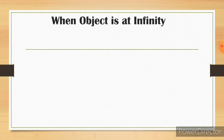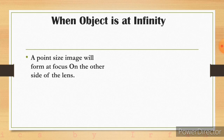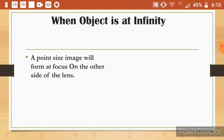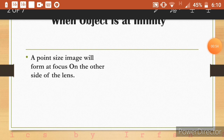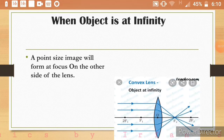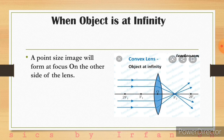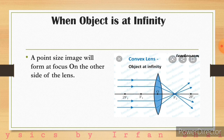First case: when object is placed at infinity. A point-size image will form at the focus on the other side of the lens. You can observe this in this ray diagram — a parallel beam of light rays falls on a convex lens and after refraction, they all converge at the focus of the lens, located at the other side of the lens.